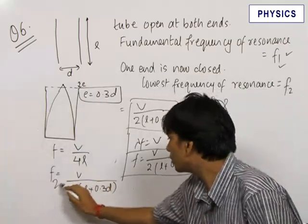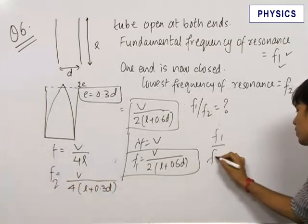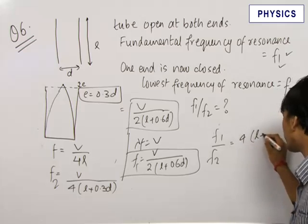This is equal to F2, and this is equal to F1. Now, if you take the ratio F1 upon F2, this comes out to be equal to 4 times L plus 0.3D